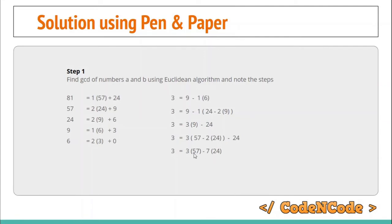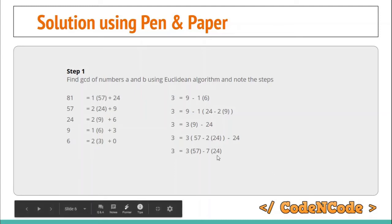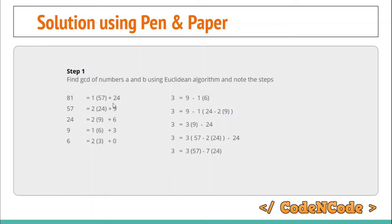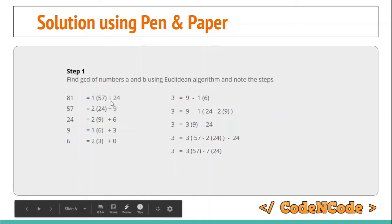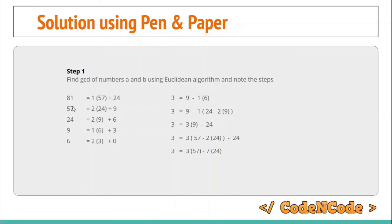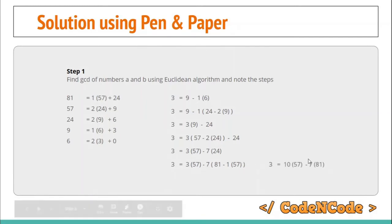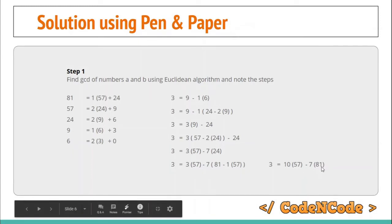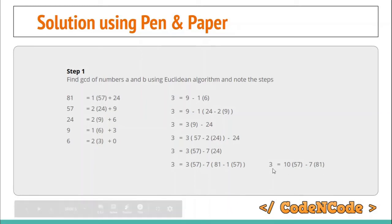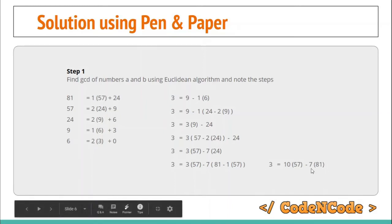From the first equation, 24 is the remainder and its value is 81 - 1 × 57. Replacing 24 gives: 3 = 3 × 57 - 7 × (81 - 1 × 57). Resolving this: 3 = 10 × 57 - 7 × 81. Now the GCD is expressed as a linear combination of 57 and 81, which is exactly what we wanted — gcd expressed in terms of a and b.